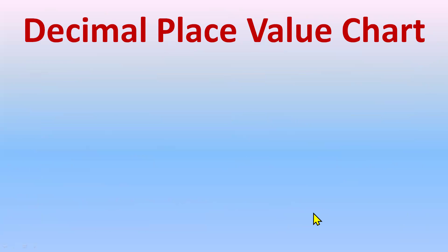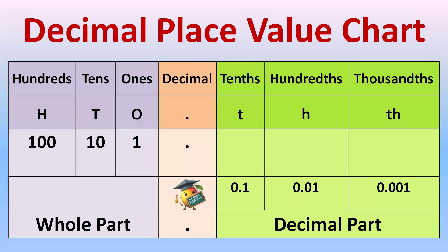So let's see the place value chart — the decimal place value chart. We know about the Indian and international place value charts, which start with 1s, 10s, 100s, 1000s, 10,000 and so on. The decimal place value chart is just an extension of that. In the chart you can see the top row: 1s, 10s, 100s, 1000s, 10,000 — the whole number part we have already done.